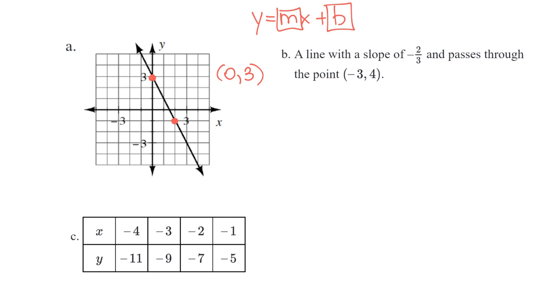So let's do the change in y over the change in x. Now notice this graph is going down, so it's going to be a negative slope. So it goes down 1, 2, 3, 4, and then over 1, 2. So then the slope is a negative 4 over 2, which can be reduced to negative 2.